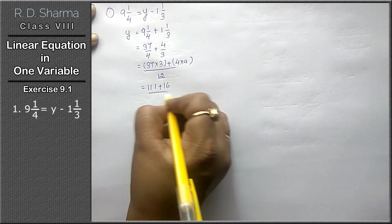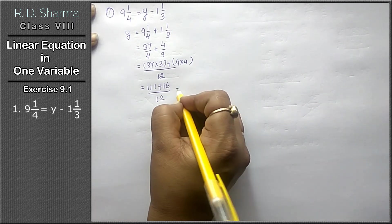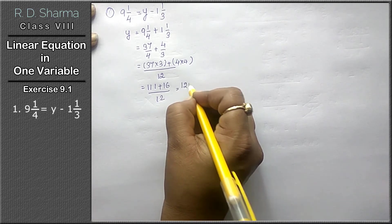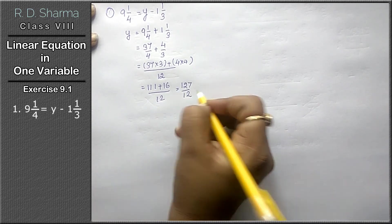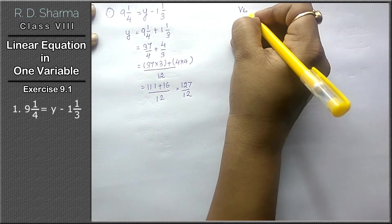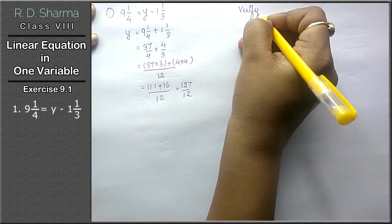Now, 37 times 3: 3 times 7 is 21, 3 times 3 is 9, so 111. Plus 16 upon 12 equals 127 upon 12. This is the answer.